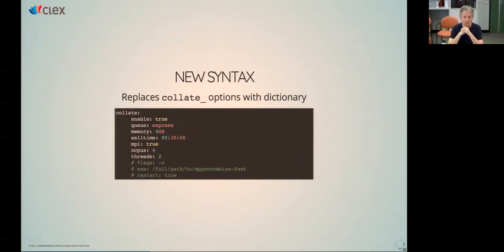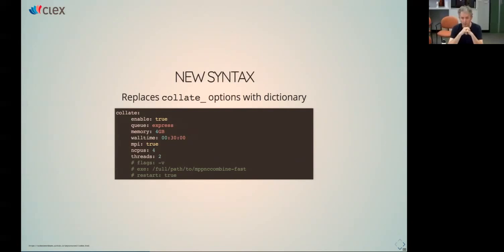There are some new flags needed to use mppnc_combine_fast. The first is 'mpi: true'. To support the old models, we needed a way of knowing whether we were running mppnc_combine_fast, since it's an MPI program - it needs to run differently from the old single-CPU program, basically putting an mpirun on the front. At some point that might become the default, but for now you have to set it. You should also supply the number of CPUs and optionally the number of threads.